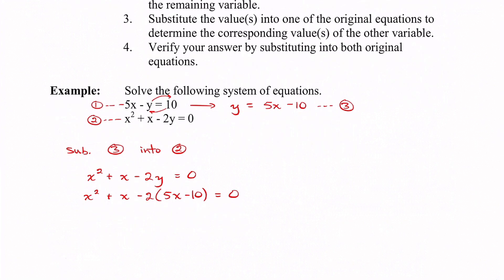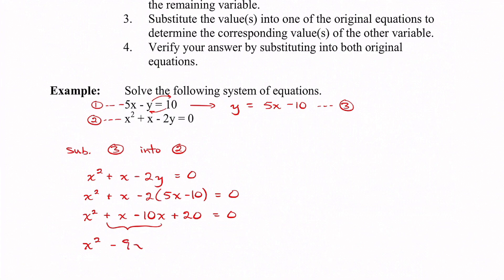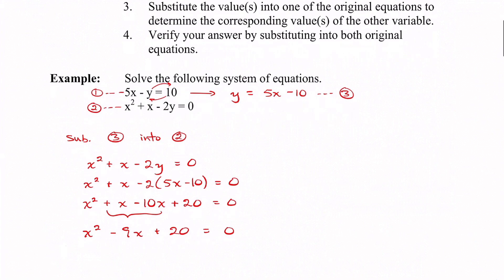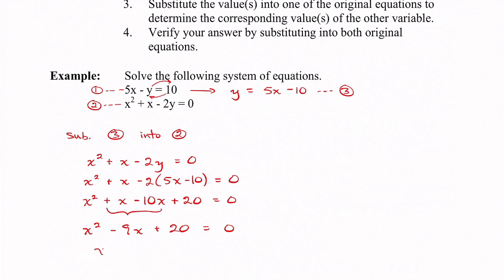We simplify: x squared plus x, then distribute the negative 2 into the bracket — negative 2 times 5x gives negative 10x, and negative 2 times negative 10 gives positive 20, all equals 0. Combining like terms: x squared minus 9x plus 20 equals 0. Factoring — we need a product of 20 and a sum of negative 9, so those numbers are negative 4 and negative 5 — giving us (x minus 4)(x minus 5) equals 0, so x equals 4 and x equals 5.